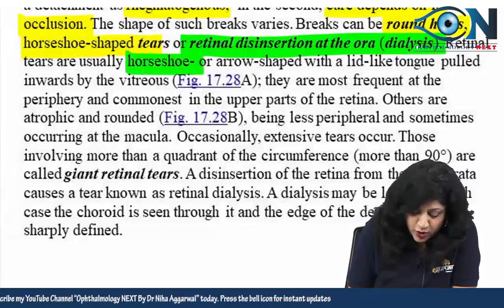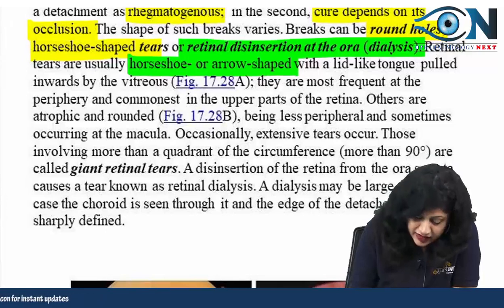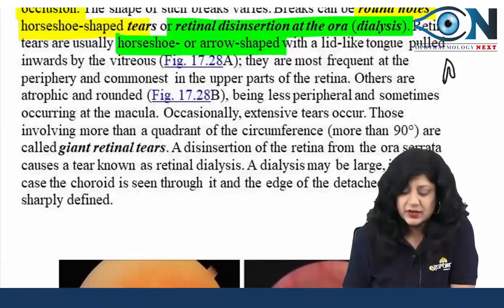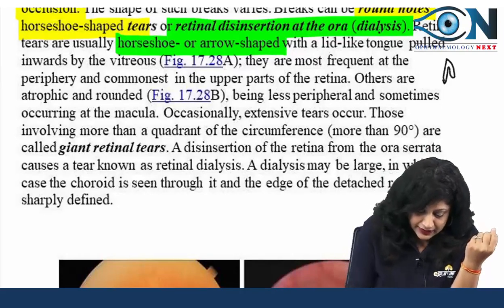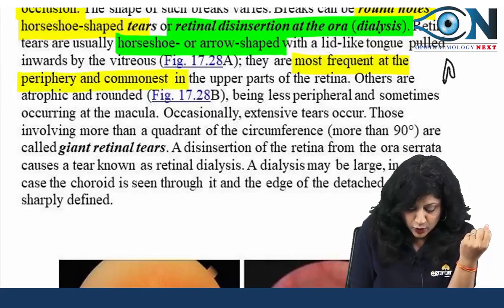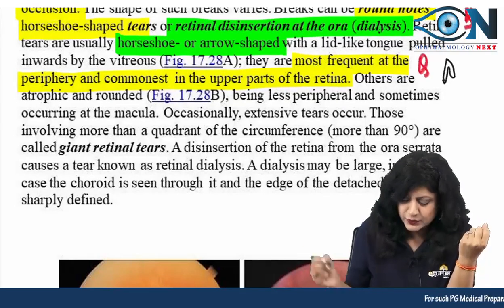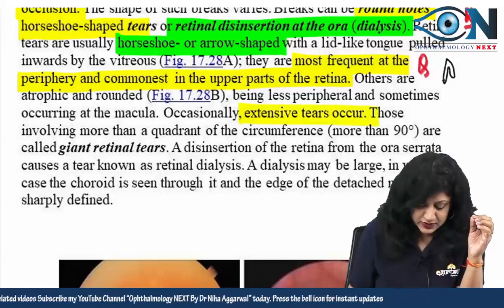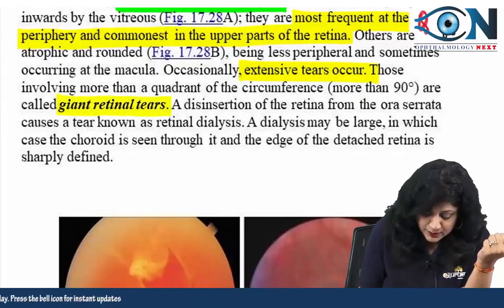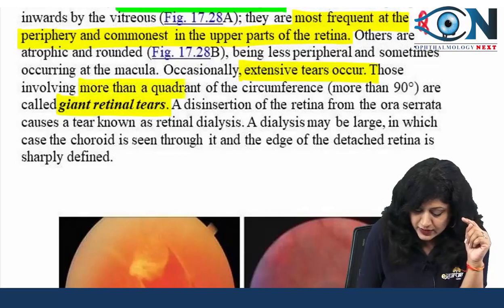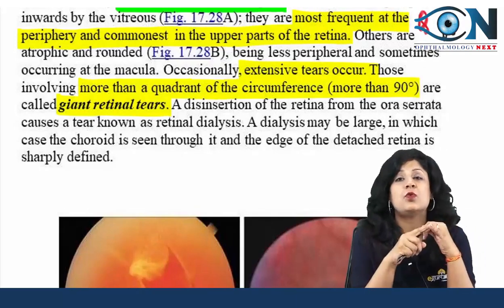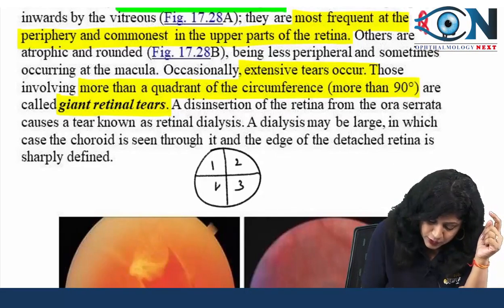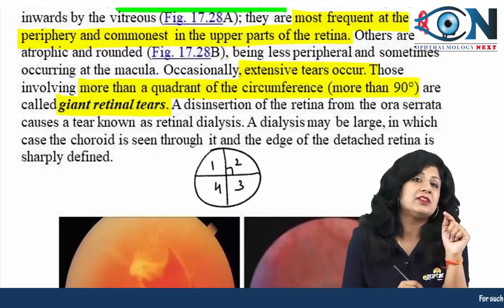Retinal tears are usually horseshoe-shaped or arrow-shaped with a lid-like tongue, pulled inward by the vitreous. They are most frequent at the periphery and commonest in the upper parts of the retina. Occasionally we have extensive tears called giant retinal tears — defined as involving more than one quadrant (more than 90 degrees) of the circumference.